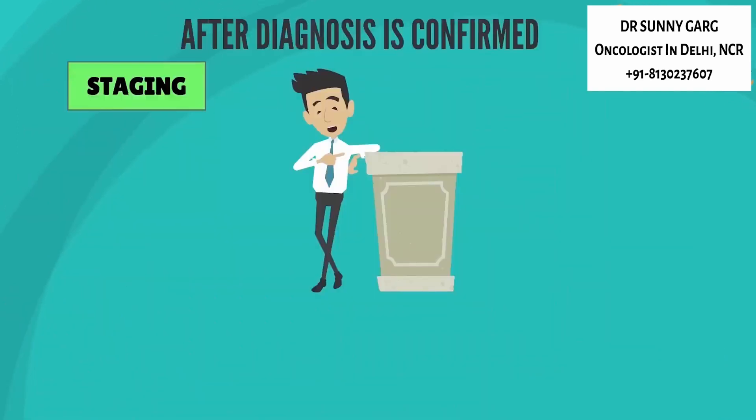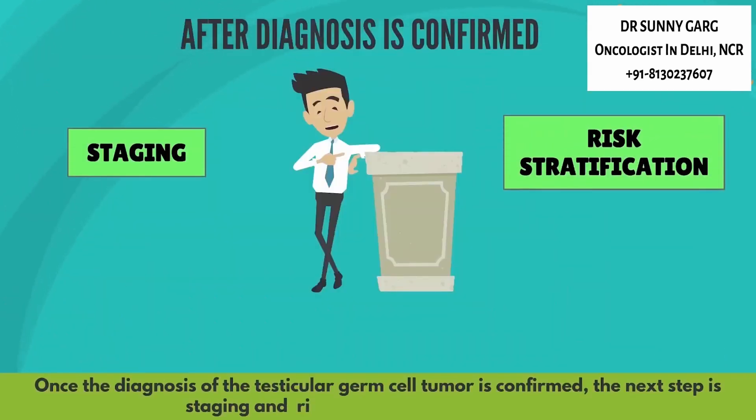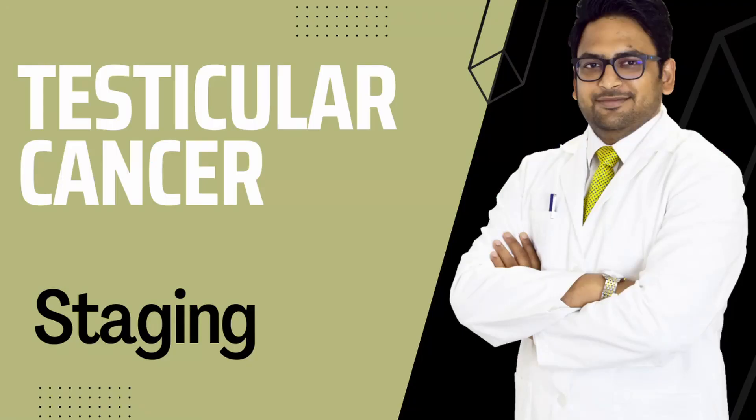Once the diagnosis of testicular germ cell tumor is confirmed, the next step is staging and risk stratification of the disease.